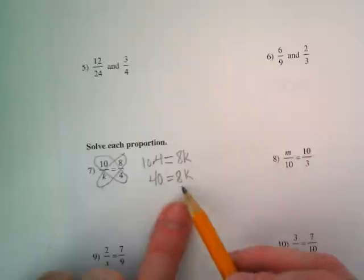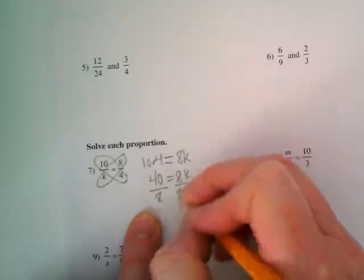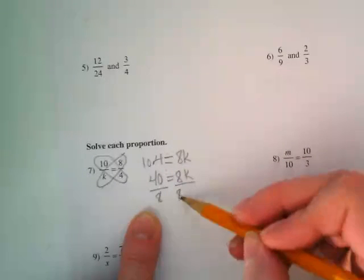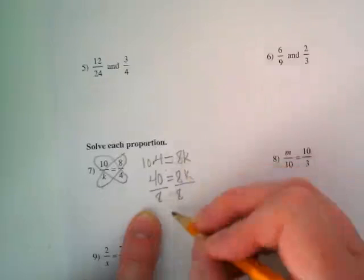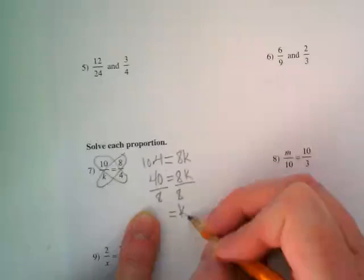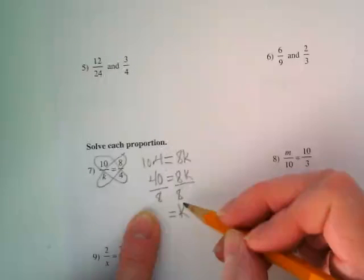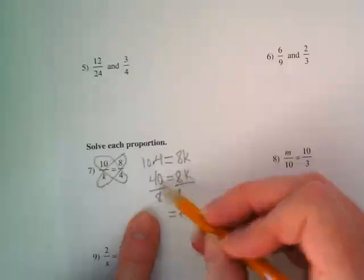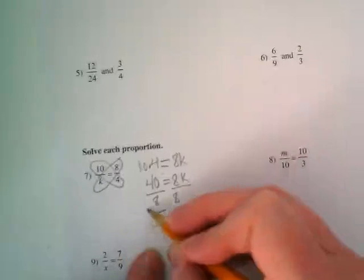This is a multiplication problem so to undo it we need to divide. What's 8 divided by 8? We like to leave it invisible so we're going to just say equals k. There's an invisible one there, that 8 over 8. Does that make sense? And then what's 40 divided by 8? 5. And that would be our answer.